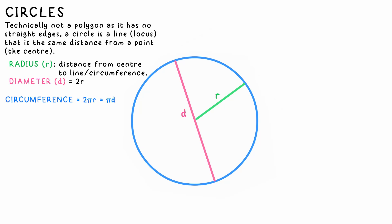Circumference is the perimeter of the circle equal to 2πr, or πd. The area of a circle is equal to πr².